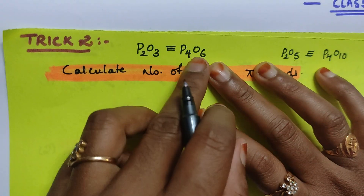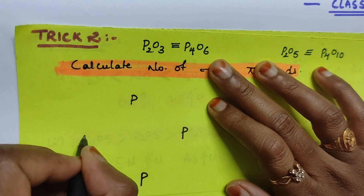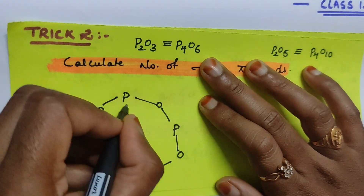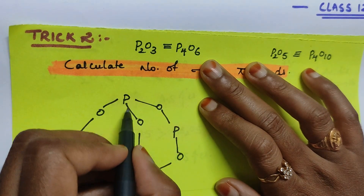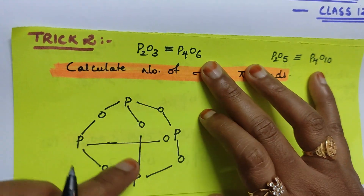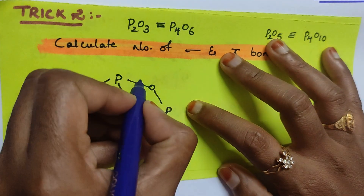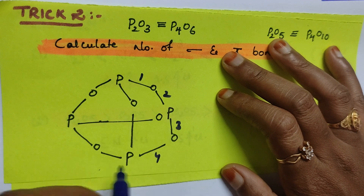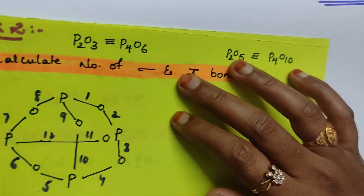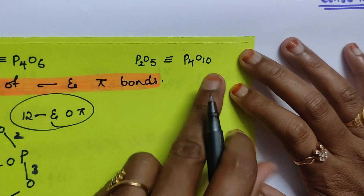What you need to do is first draw the structure of P4O6. Draw one phosphorus here, one phosphorus here, one phosphorus, one phosphorus — then connect oxygen in between each pair, and connect one oxygen at each bridging position. This is P4O6. Now count the number of sigma bonds — single bond is a sigma bond: 1, 2, 3, 4, 5, 6, 7, 8, 9, 10, 11, 12 sigma bonds, and there is no pi bond. So the answer is 12 sigma and 0 pi.